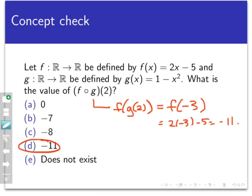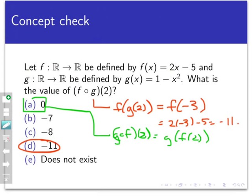Now the other options in this list, except for the very last one does not exist, do arise through composition. It's just not f circle g. The first option, 0, is the result of g circle f of 2. The same two functions, but composed in the opposite order. Now this time, the opposite order composition makes mathematical sense because the domains and the co-domains of f and g are all the same. So g circle f of 2 we would get by evaluating f of 2 first. That would give me 2 times 2 minus 5, which is negative 1. And then I take that result and run it through g, and that would give me g of negative 1 is 1 minus negative 1 squared, which is 1 minus 1, which is 0.